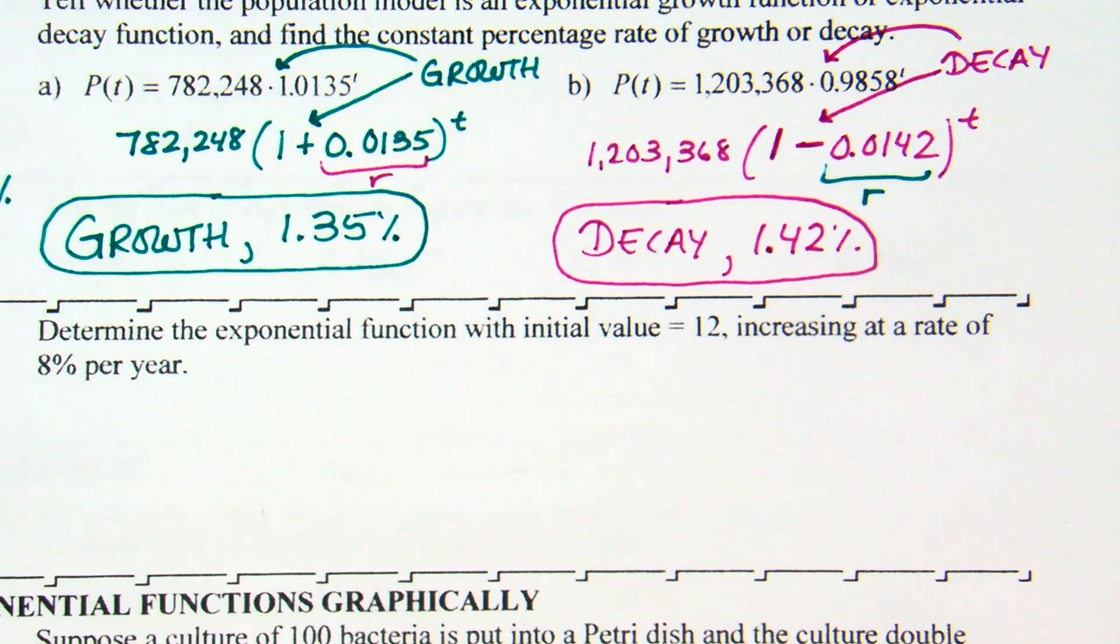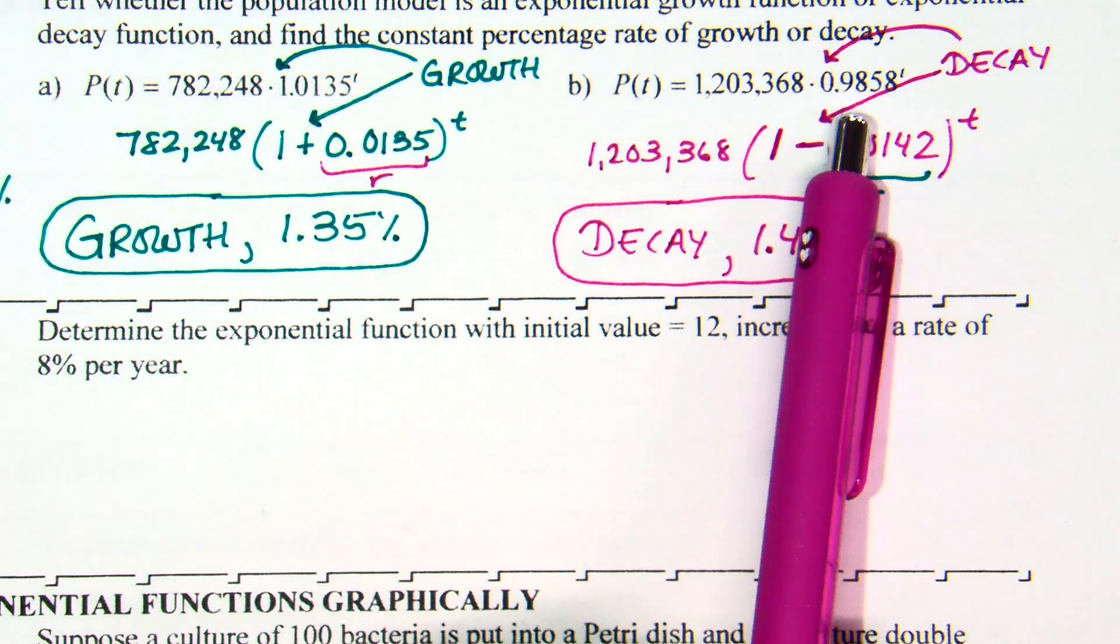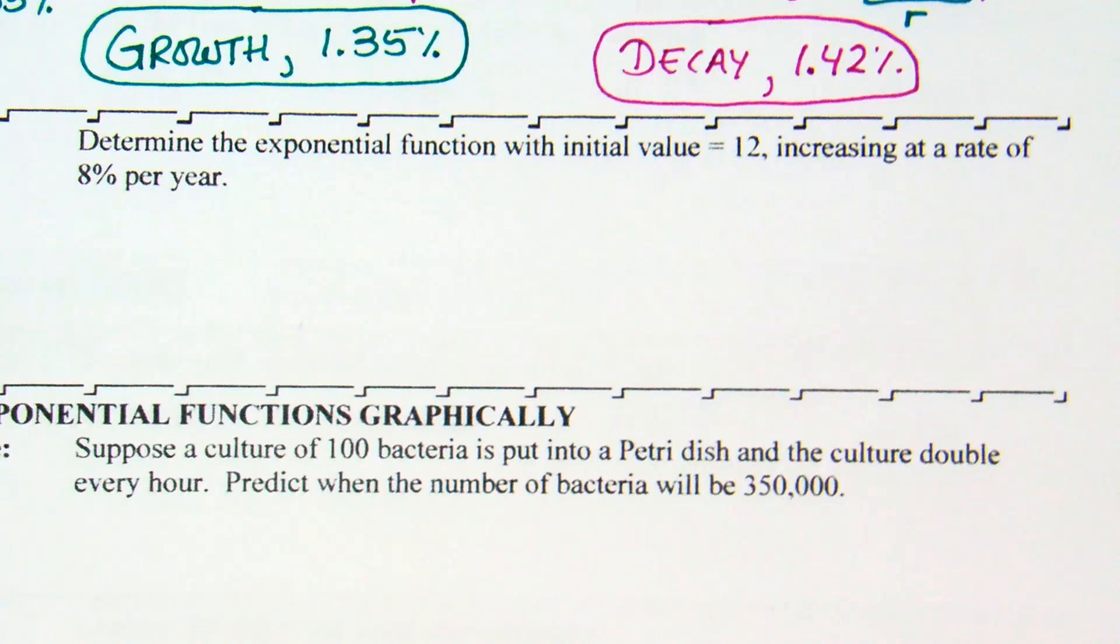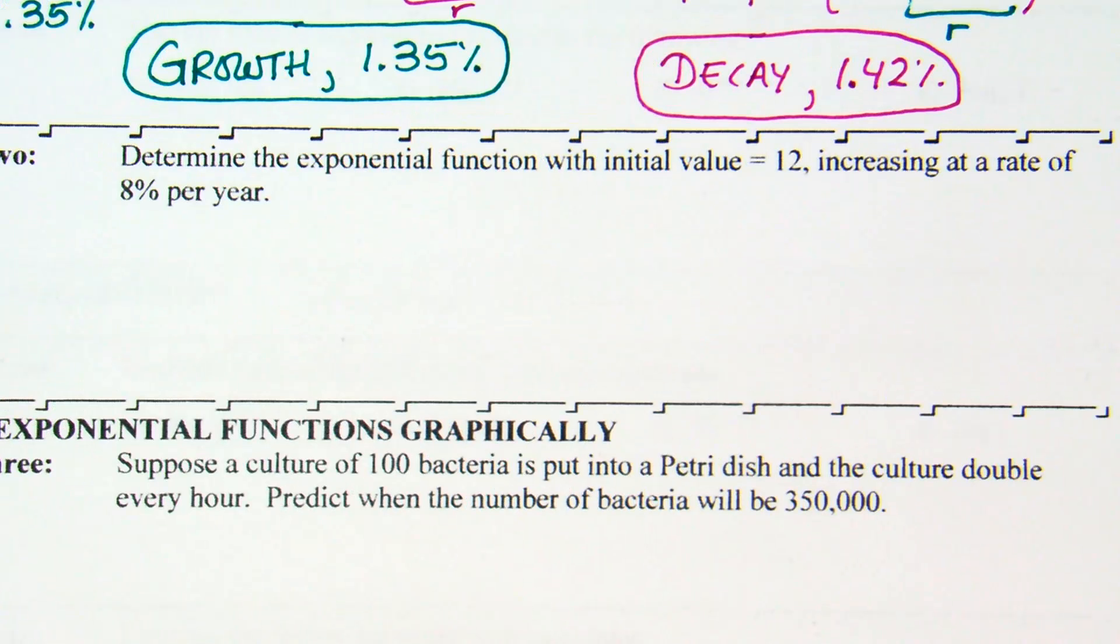So, this problem is decay with a decay rate of 1.42%. You have to watch. If they ask you for the percentage rate, they want you to separate that and get the percentage rate. If they ask you for the growth or decay factor, they would have wanted, like the decay factor would be .9858. They want that number with the one mixed in. Okay. Moving on. Stop me if I get going too fast. Next example says, determine the exponential function with initial value 12, increasing at a rate of 8% per year.